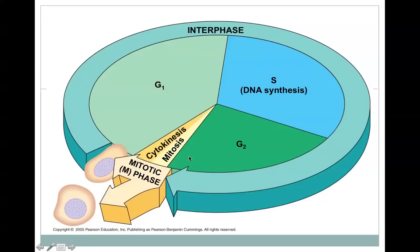It gets ready for the actual cell division phase, which is the mitotic or M phase, which is made up of mitosis and cytokinesis. And at the end of that, we have two daughter cells, which then return back into G1.